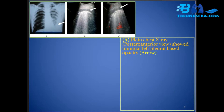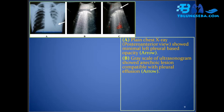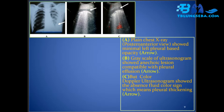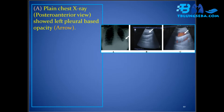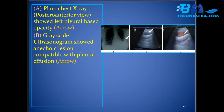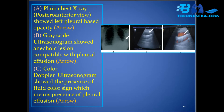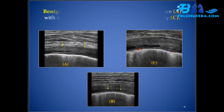A plain chest X-ray postero-anterior view showed minimal left pleural-based opacity. Grayscale ultrasonogram showed an anechoic lesion compatible with pleural effusion, but the absence of a fluid color sign on color Doppler indicates pleural thickening. In another case, plain chest X-ray showed left pleural-based opacity; grayscale USG showed an anechoic lesion compatible with pleural effusion, while color Doppler ultrasonogram showed the presence of a fluid color sign confirming pleural effusion.